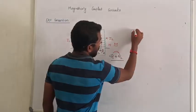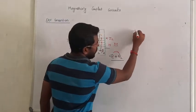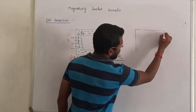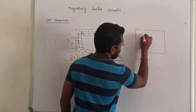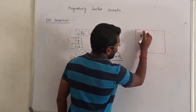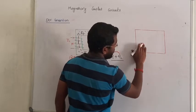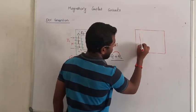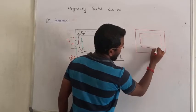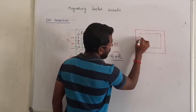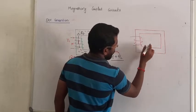Suppose I reverse the direction of the current — let us see what happens. If we are reversing the direction of the current, the current enters at a different node. Let me take some coil here to demonstrate.